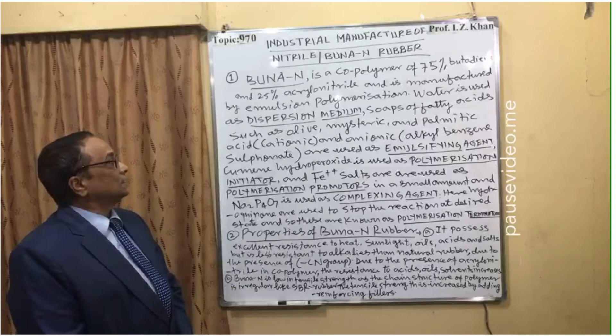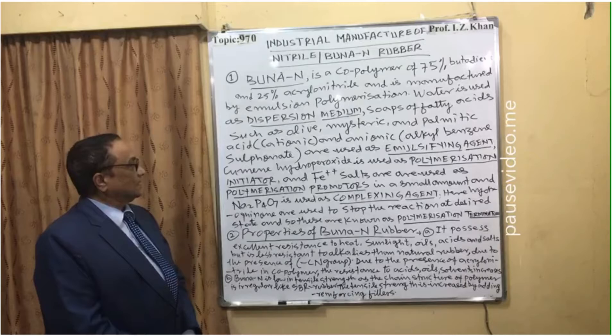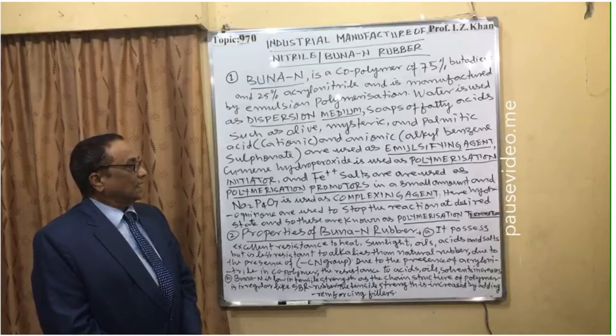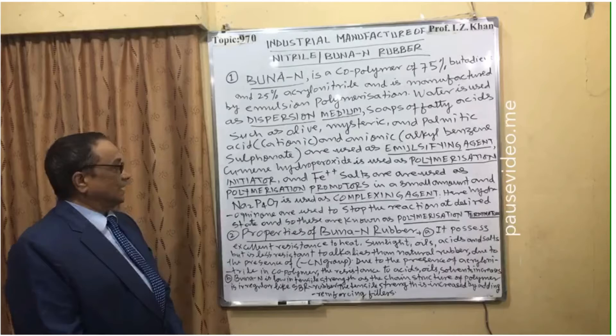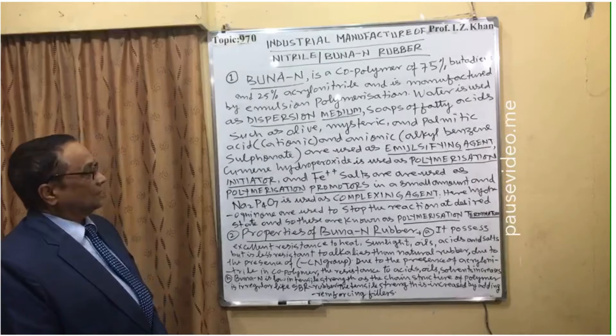Emulsifying agents — whether cationic or anionic — play a very important role. Alkyl benzyl sulfonate is used as an emulsifying agent. Cumene hydroperoxide is used as the polymerization initiator to initiate the polymerization reaction.